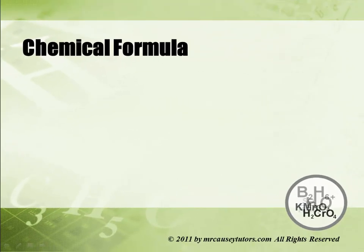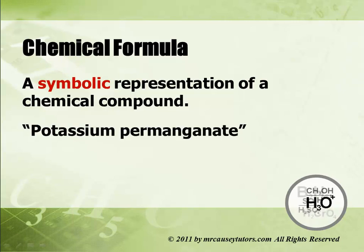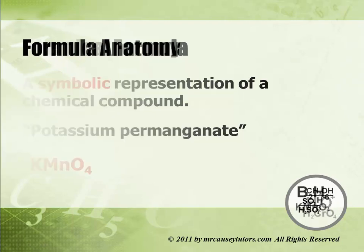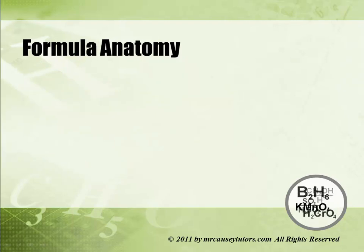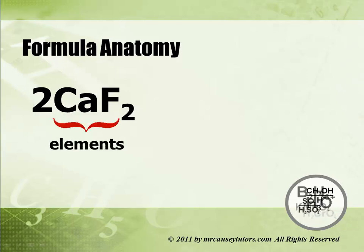So what is a chemical formula? It's a symbolic representation of a chemical compound. For example, potassium permanganate has the symbolic representation KMnO4. Looking at formula anatomy, we need to make sure we understand how formulas are put together. Take CaF2 — calcium fluoride — where calcium and fluorine are the elements.